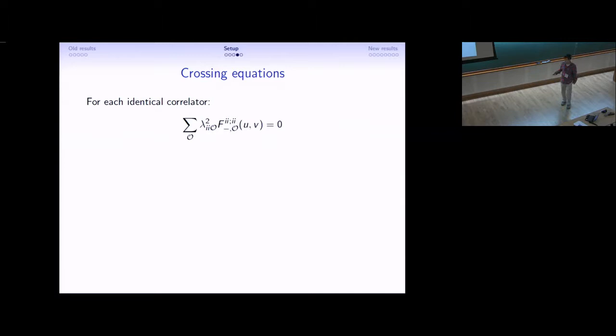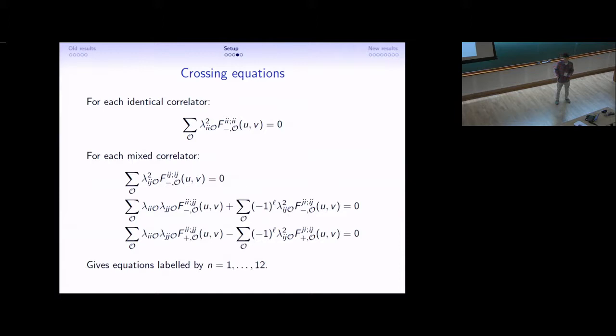I'm going to consider three correlators with identical scalars and three correlators with mixed scalars. Then, for the identical crossing equations, we just get this, which is very familiar. Here, i can be either sigma, epsilon, or chi. Each mixed correlator gives a set of three crossing equations, where i, j can be sigma, epsilon, sigma, chi, or epsilon, chi. In total, the number of crossing equations is 12.